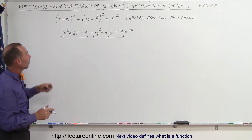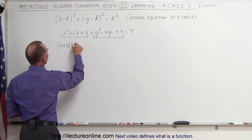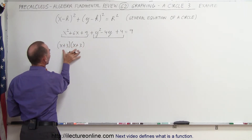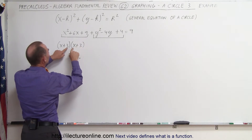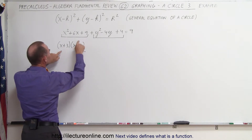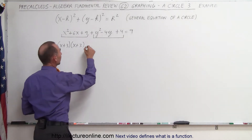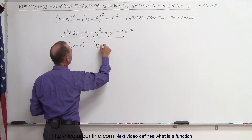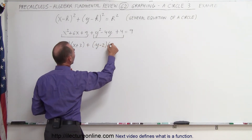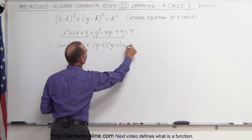Here we could write this as (x + 3)(x + 3), because 3 times 3 gives me 9, and 3x plus 3x gives me 6x — so that looks like the factored form. Then here we write it as (y − 2)(y − 2), and the right-hand side can be written as 3 squared.